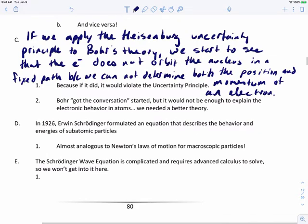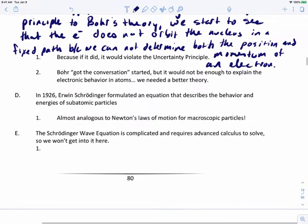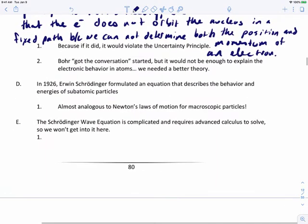In 1926, Erwin Schrödinger formulated an equation that describes the behavior and energies of subatomic particles. This is almost analogous to Newton's laws of motion for macroscopic particles, and what he called it was the Schrödinger wave equation. The Schrödinger wave equation is complicated and requires advanced calculus to solve, so we won't go into it here.